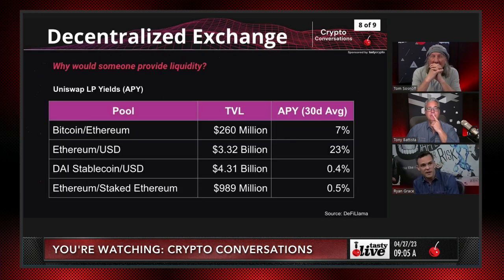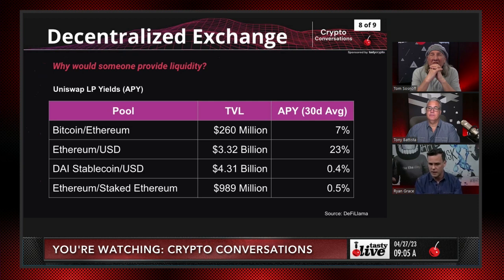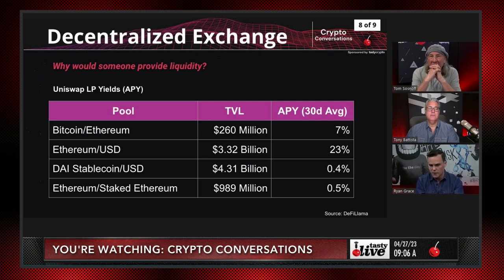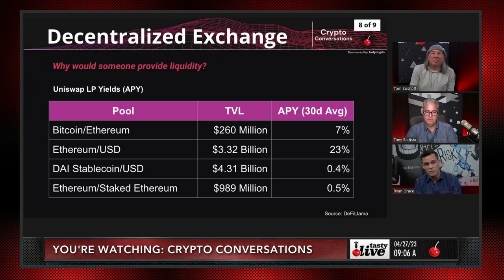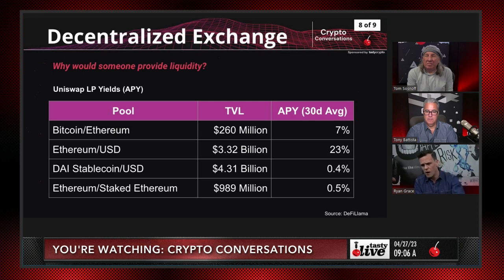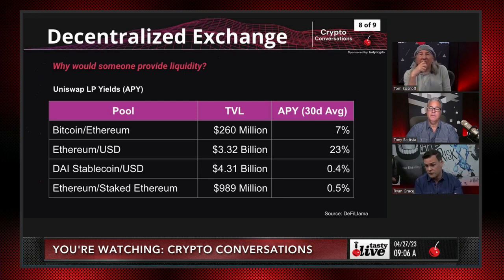Let's take a quick look at the rates. It depends on where you're providing liquidity. For the crypto-versus-crypto pool — wrapped Bitcoin and Ethereum — there's $260 million in total value locked and an APY on the 30-day average running about 7% annualized. The Ethereum-USD pool is much bigger, over $3 billion in TVL, well off the highs we've seen at times, but running at a 23% rate. And then you have stablecoins, which have some risk — we've seen short-term de-pegs.